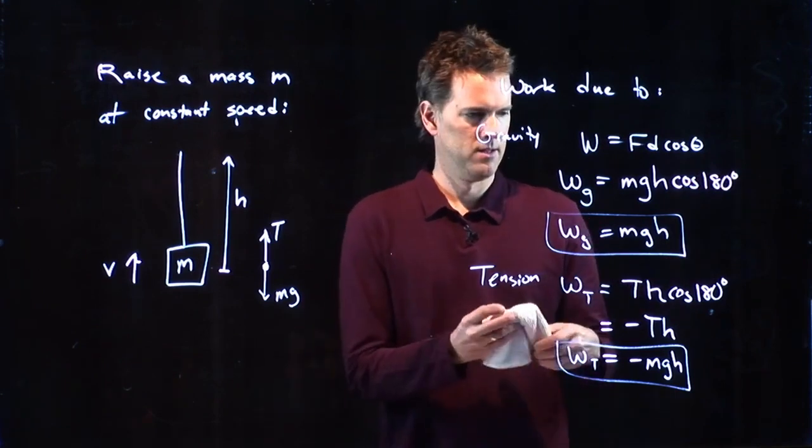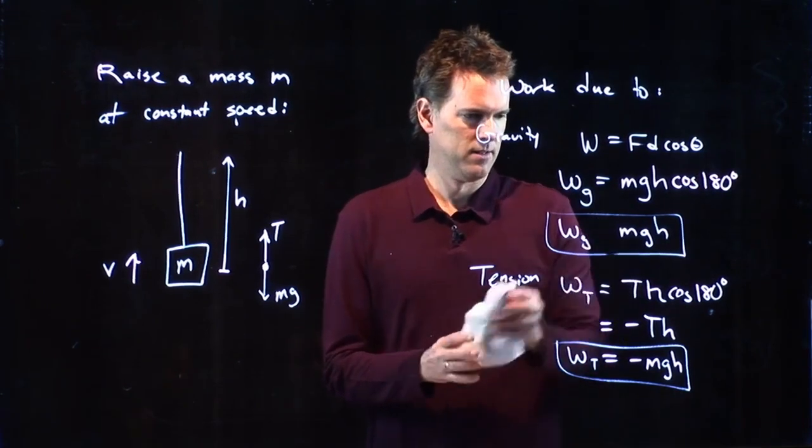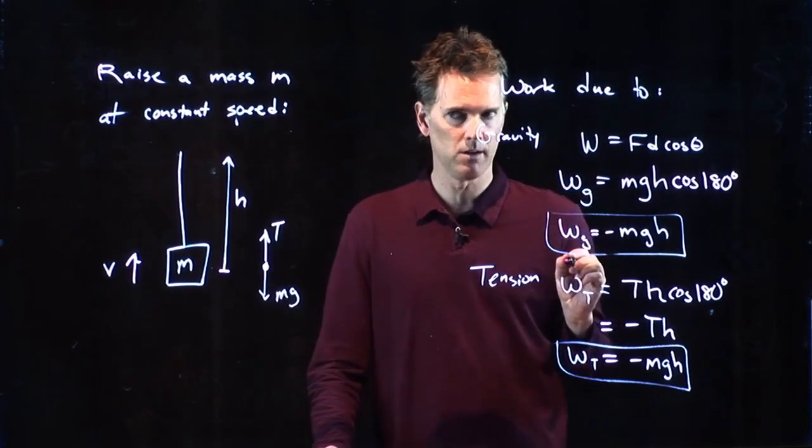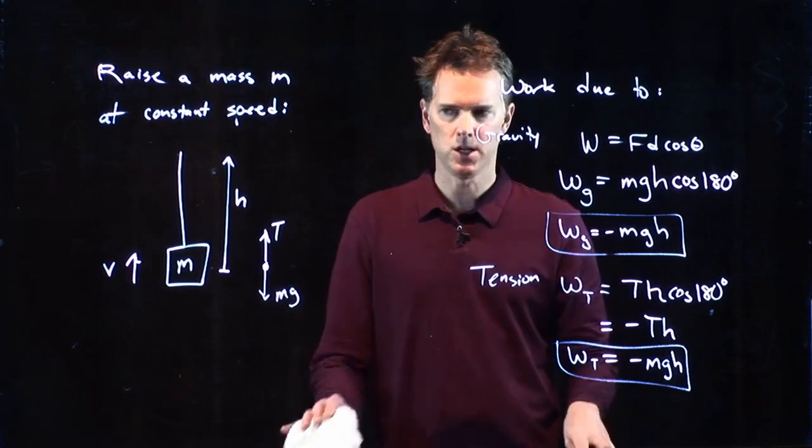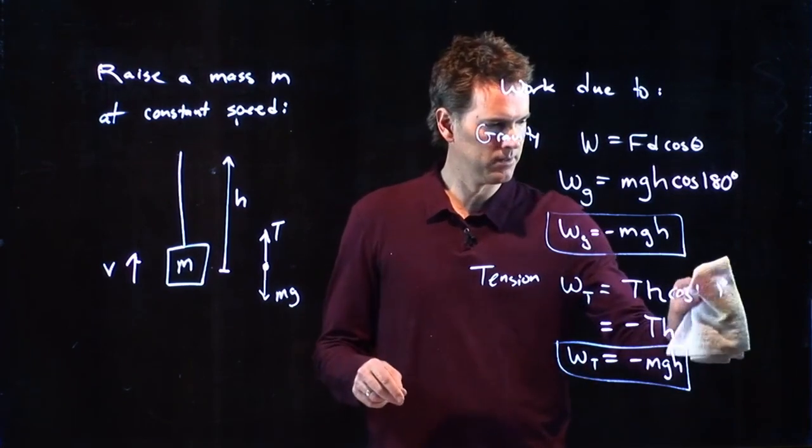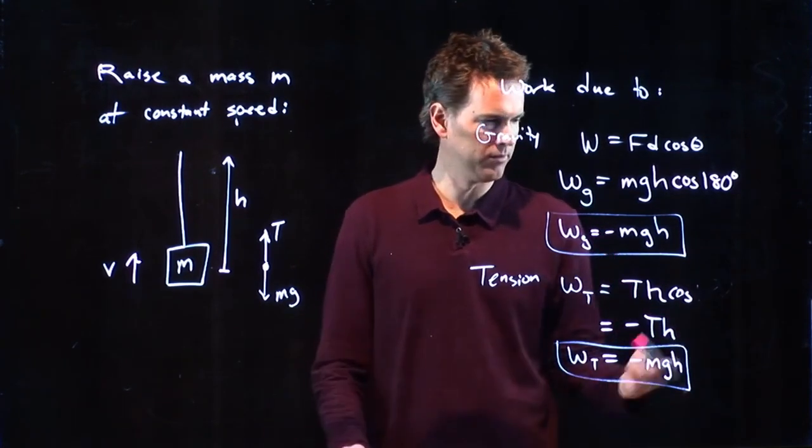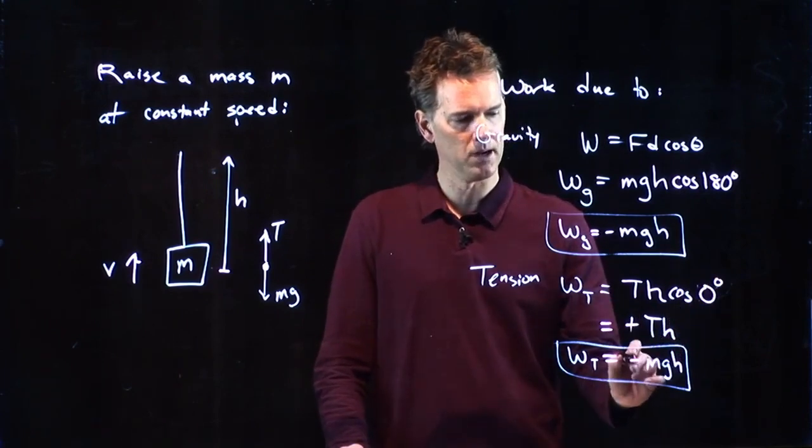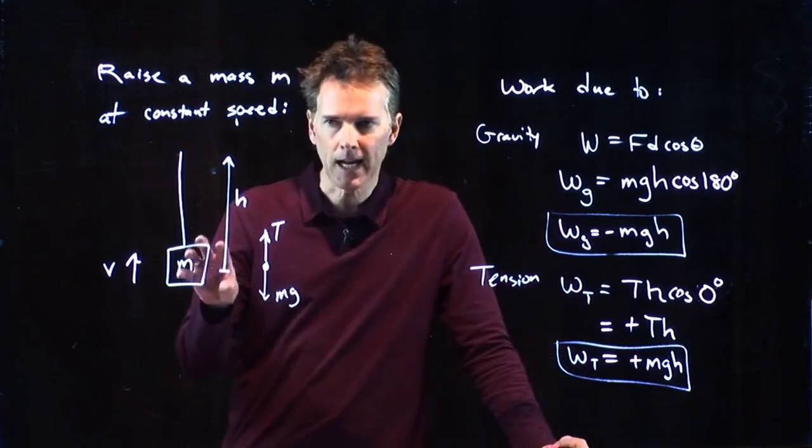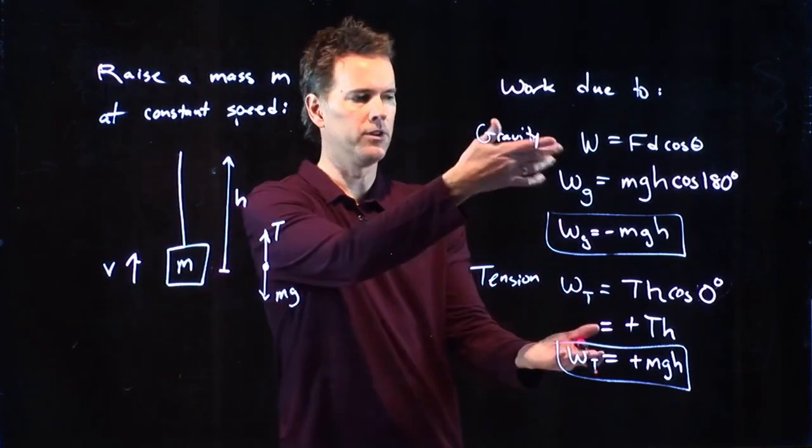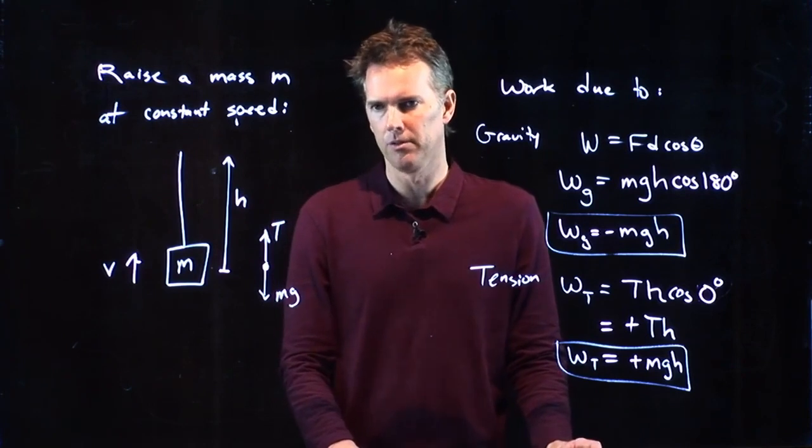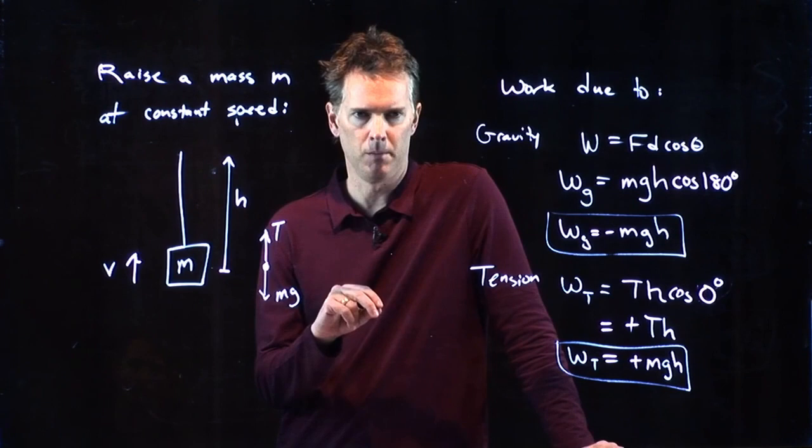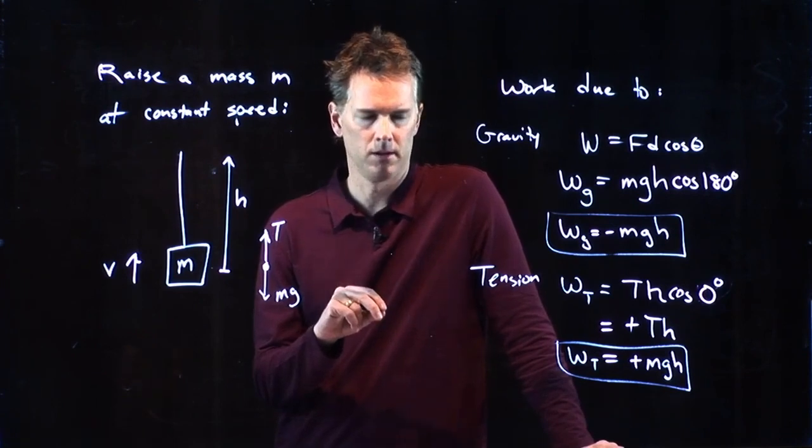And so this is not mgh. It's minus mgh. Tension is in the same direction as the force. And so here we put zero degrees, which means this becomes a positive. So if we change the direction of the displacement, we've just swapped the signs on both of those. Everybody more or less okay with it?